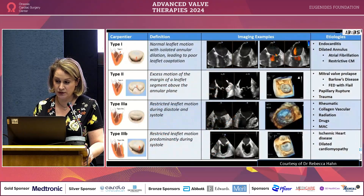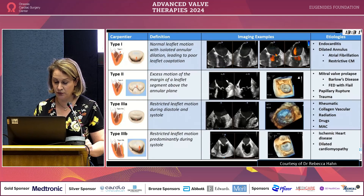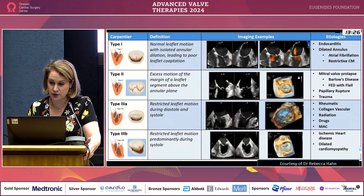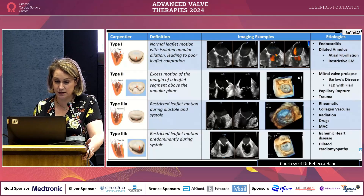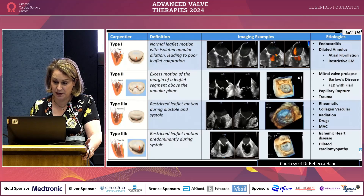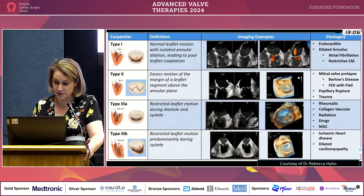We have a classification of mitral regurgitation based on the Carpentier classification. Type 1 comes from a dilated annulus, such as atrial fibrillation or previous endocarditis. Type 2 is usually seen in Barlow's valve or papillary rupture. Type 3a is rheumatic, and Type 3b is seen in ischemic heart disease — the first setting where we started placing mitral clips.